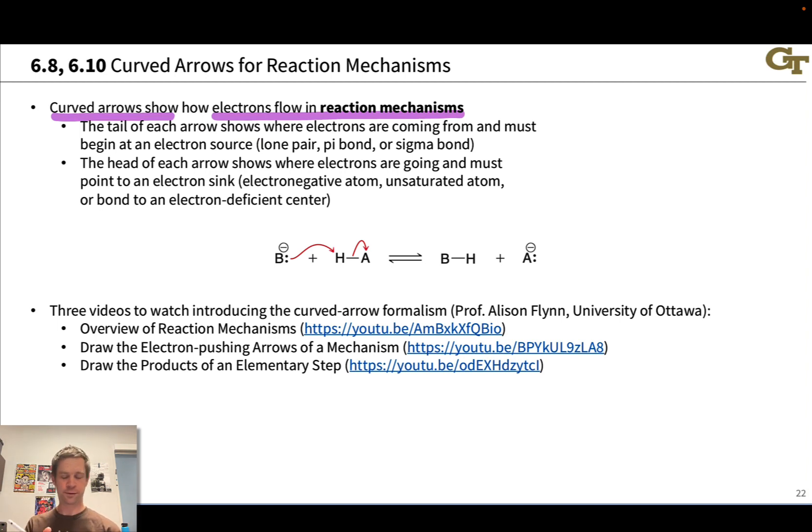In a proton transfer reaction, H plus is transferred from the acid to the base. But we do not use an arrow like this to show that transfer. That would show the movement of the atom. What we're interested in is the movements of the electron pairs. And so we use two curved arrows because two electron pairs are involved in this process to show the transfer of a proton H plus.